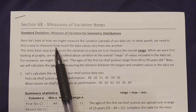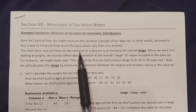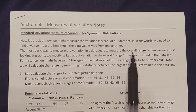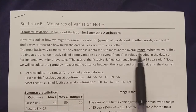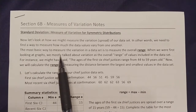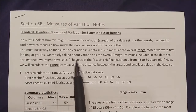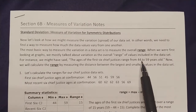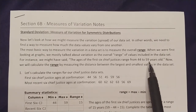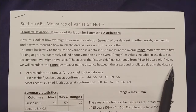We need to find a way to measure how much the data values vary from one another. The most basic way to measure variation is to measure the overall range. Range is another measure alongside mean, median, and mode from section 6a. We mostly talked about variation as the overall range of values — for instance, the ages of the first six chief justices range from 44 to 59 years old. We calculate the range by measuring the distance between the largest and smallest values.